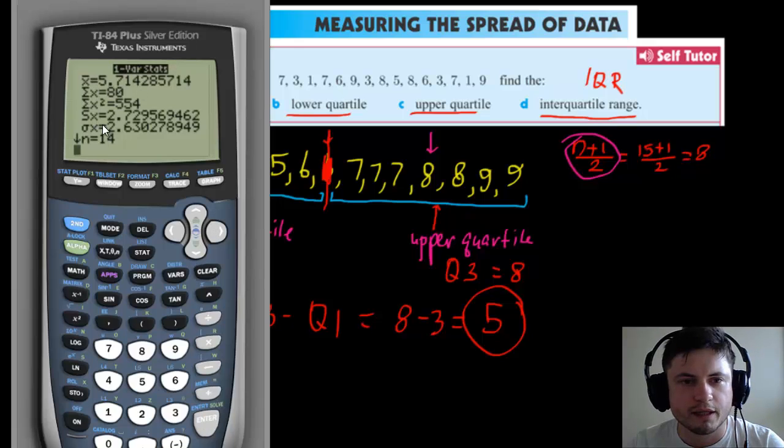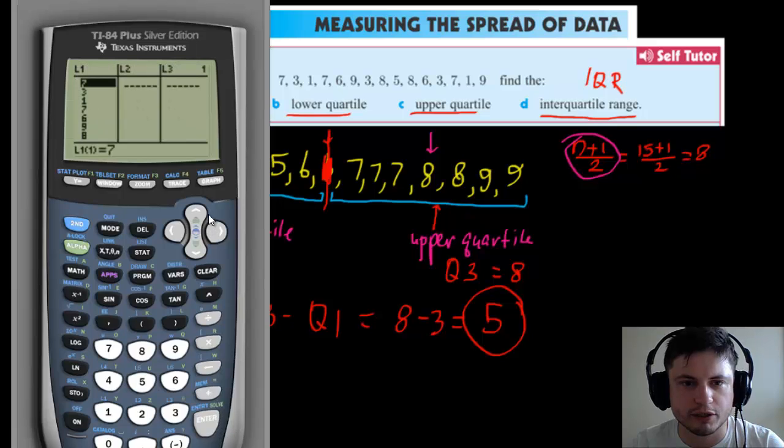It says right here, your mean is on top. This right here is standard deviation—this is what we're doing next time. Here you can already see I have a mistake because it says n = 14, so this is 14 values. But we actually know this is 15 values, so I have to double-check my stats. I think I missed a number. I just realized I missed a 3, so I'm going to add